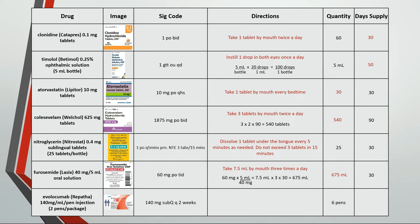This drug is an injectable. The directions are to inject 140 mg or one pen under the skin every two weeks. Avoid saying subcutaneously because some patients might not know what subcutaneous means. If we're dispensing six pens and they're using one pen every 14 days, then that's an 84-day supply.